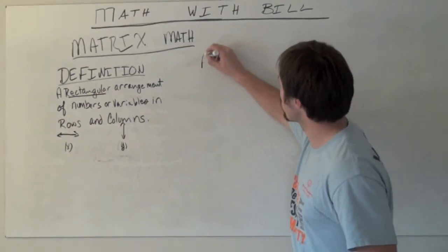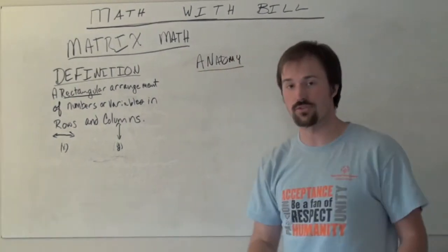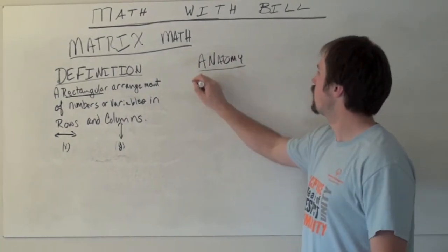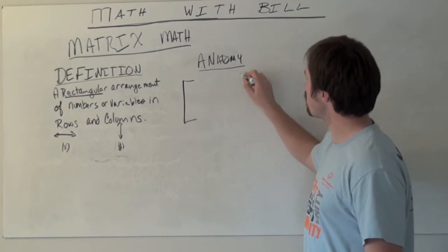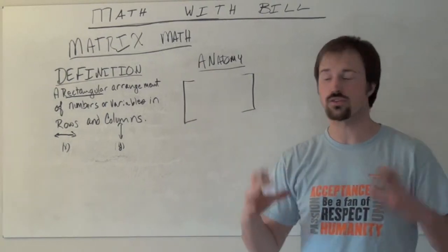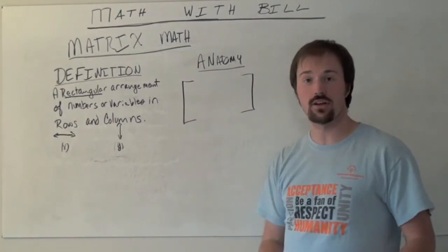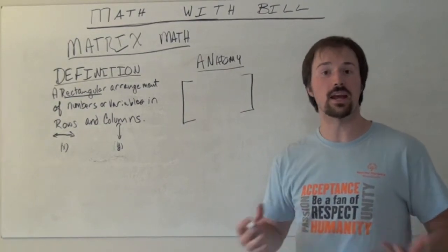So let's take a look at the anatomy of a matrix. Any matrix worth its salt starts off with two sets of bars. So it's got these brackets and it's the inside of these two brackets that make up our matrix.